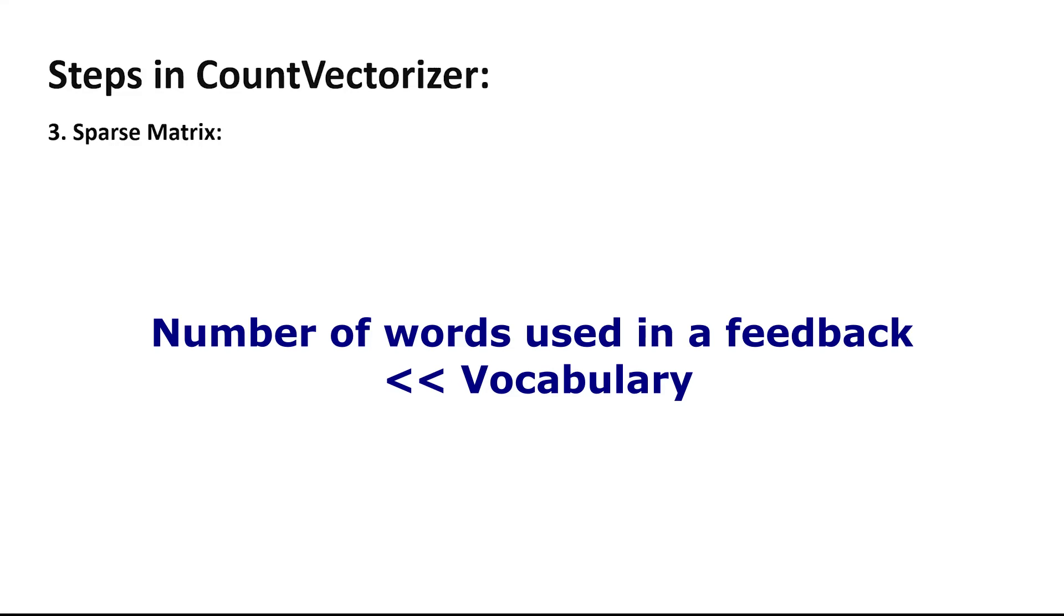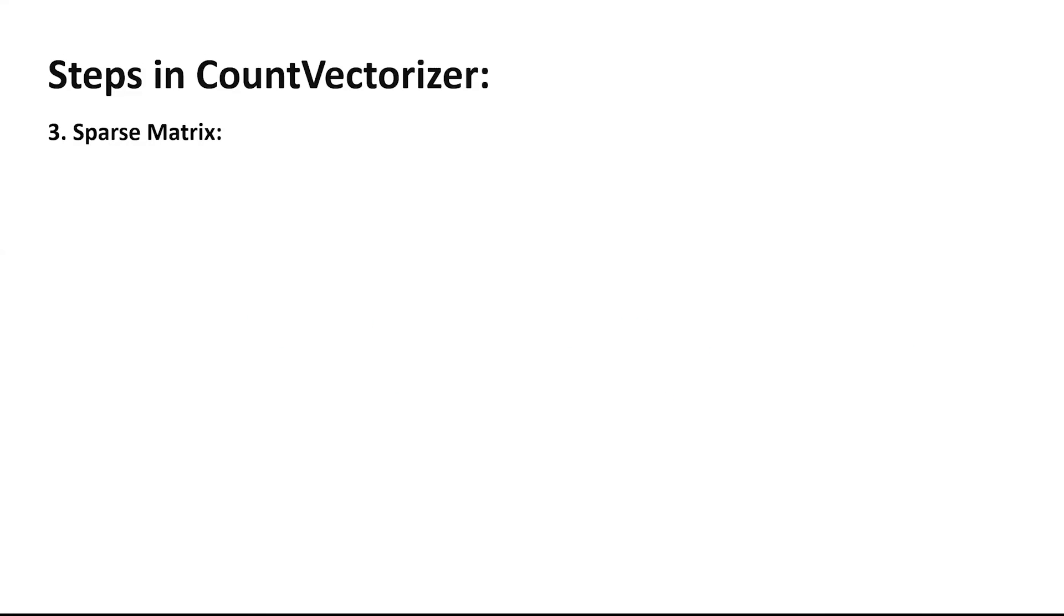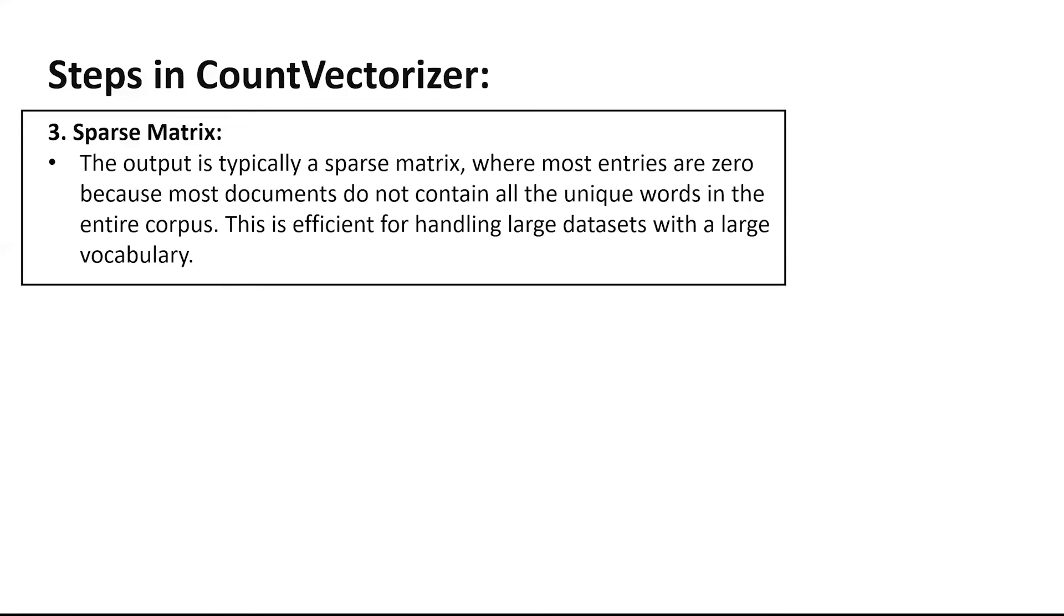So obviously, you will have a lot of zeros in this case because your vocabulary, if that takes the columns of the data and the words you're using are limited in counts, obviously in that case, you would have a lot of zeros for every feedback. And you'll get this better when we start with the example here. So it emphasizes the same. The output is typically a sparse matrix where most of the entries are zeros because most documents do not contain all the unique words in the entire corpus. And that's why it is efficient for handling large data sets with a large vocabulary.